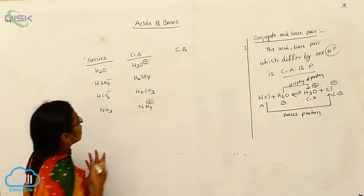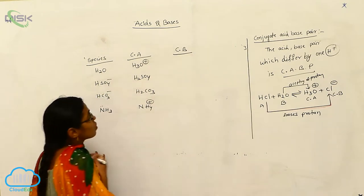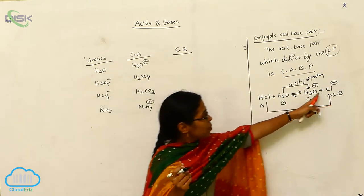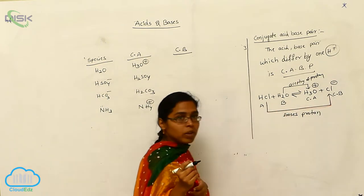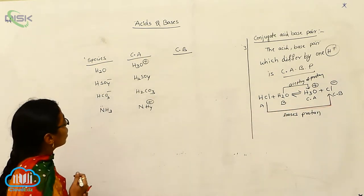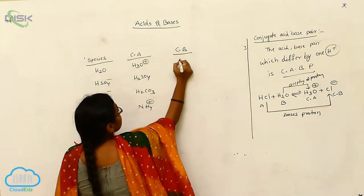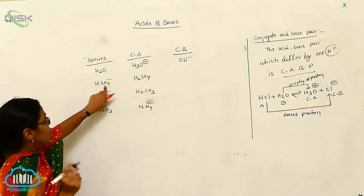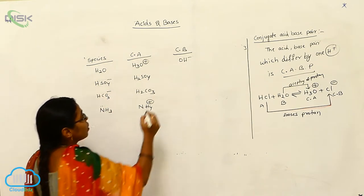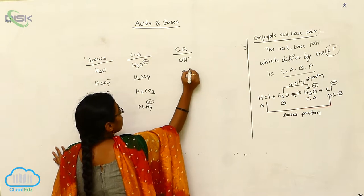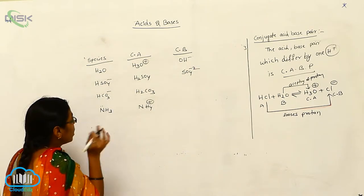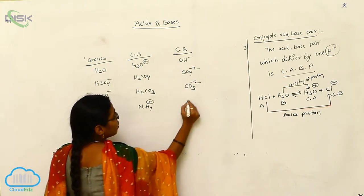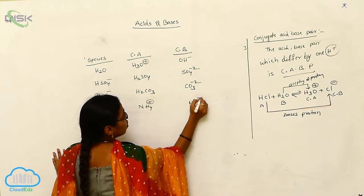Now I want to explain conjugate base. Conjugate base is always formed by the losing of protons. So whenever the proton is lost from H2O, the ion formed is OH minus. For HSO4 minus, whenever it loses the H plus ion, you get SO4 2 minus. And HCO3 minus loses H plus to give CO3 2 minus. And NH3 gives NH2 minus.